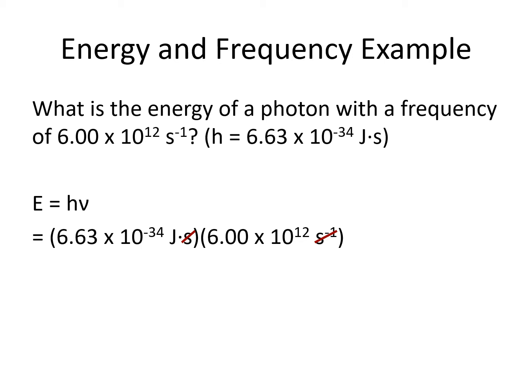When we multiply Planck's constant and the frequency in this problem, we come out with 3.98 times 10 to the minus 21 joules.